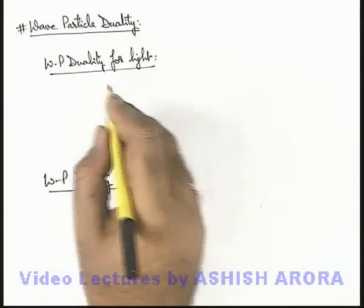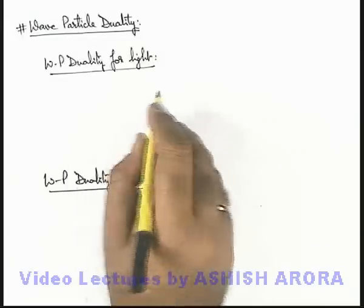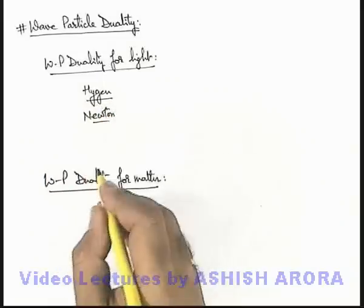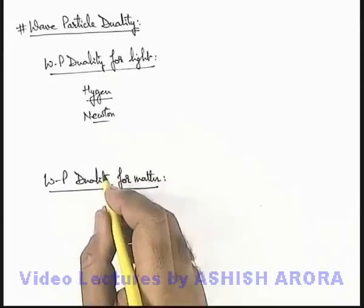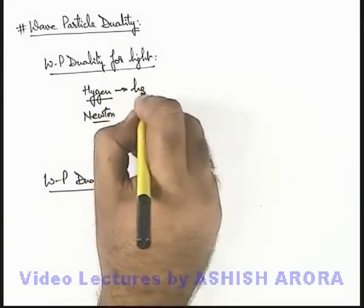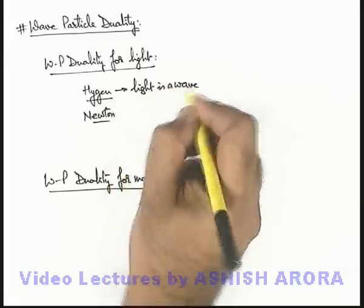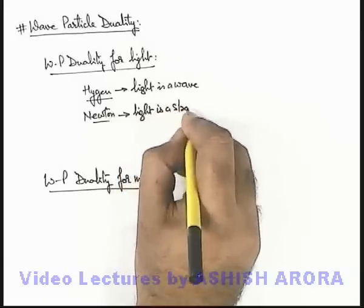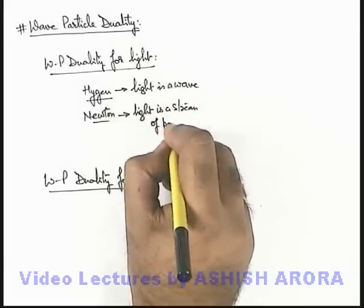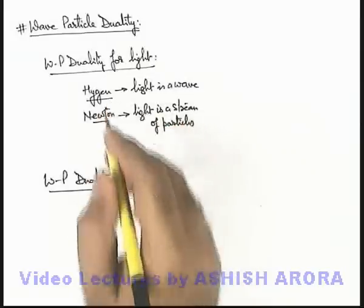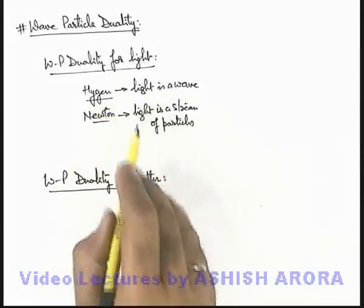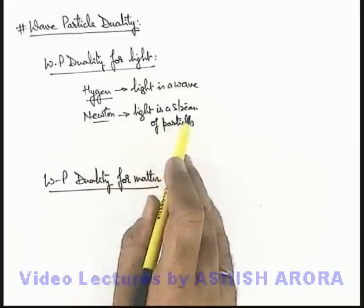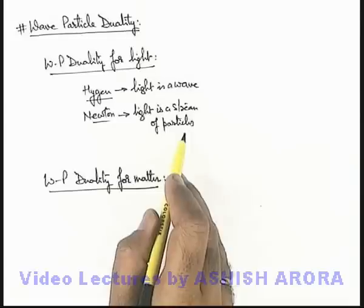In wave-particle duality for light, long back there were two physicists — one was Huygens and the other was Newton — who did research and presented their theoretical models. Huygens said that light is a wave, and Newton said that light is a stream of particles. Huygens' theory was known as Huygens' theory of wavefront propagation, and Newton's theory was called the corpuscular theory of light propagation, in which Newton said that light is a stream of particles known as corpuscles of light.